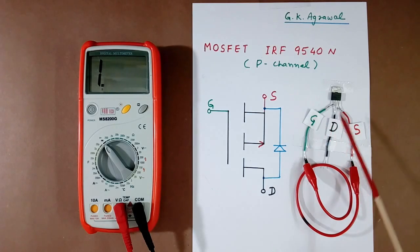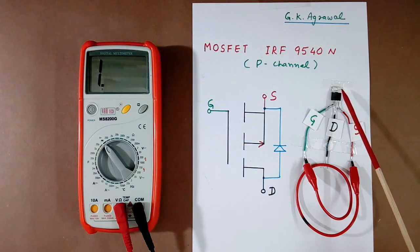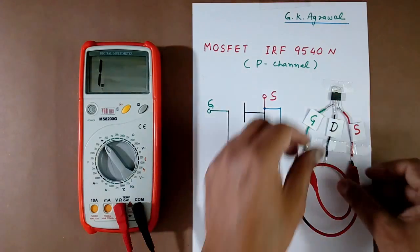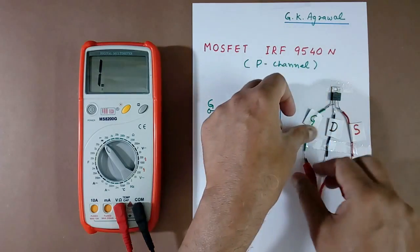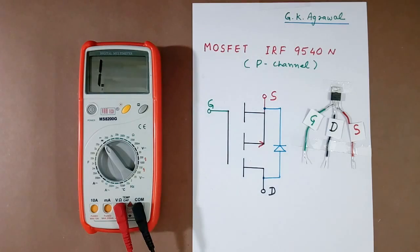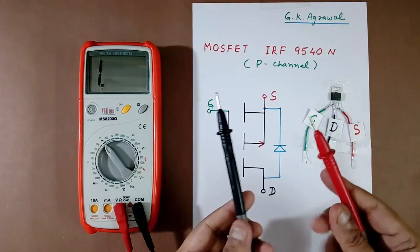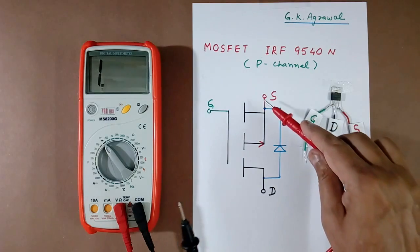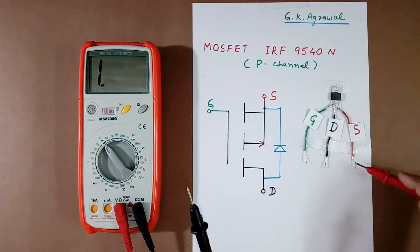Now I will check this MOSFET for ON condition. For that I will remove this wire first. Now what we do, I have these two terminals. Plus one I will keep here at source, so I have kept here.